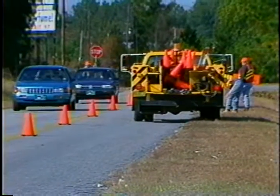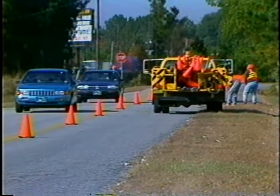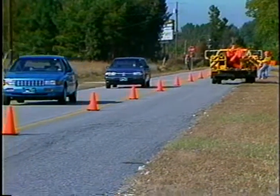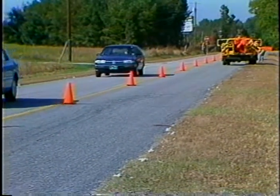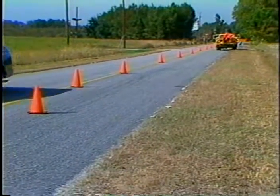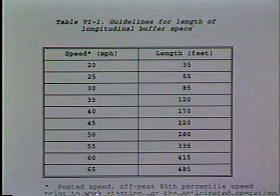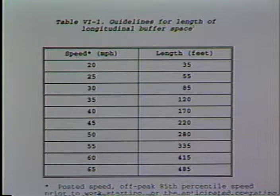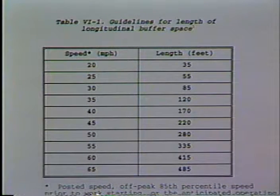It is important for the buffer space to be free of equipment, workers, materials, and vehicles. The length of the longitudinal buffer space is based on the stopping distance for the speed being considered. Table 6-1 of the Manual on Uniform Traffic Control Devices provides guidelines for the length of buffer spaces for various speeds. It is measured from the end of the transition area to the beginning of the work space.